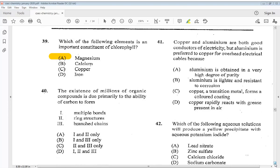Question 40. The existence of millions of organic compounds is due primarily to the ability of carbon to form one multiple bonds, two ring structures, three branch chains. So the answer would be all of them D, 1, 2, and 3.